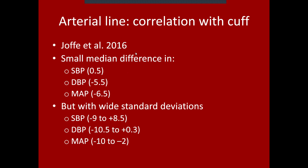They found a relatively small median difference in systolic blood pressure when correlating arterial line and noninvasive blood pressures — only about half a point in systolic BP. However, they did see a larger difference in both diastolic and mean arterial blood pressures when comparing arterial and noninvasive cuff blood pressures.